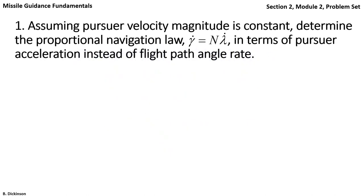Assuming pursuer velocity magnitude is constant, determine the proportional navigation law in terms of pursuer acceleration instead of flight path angle rate.